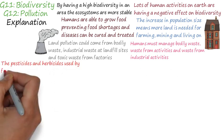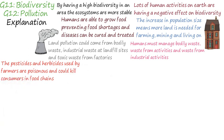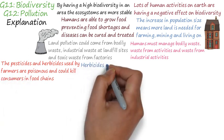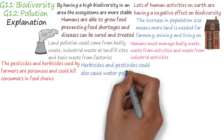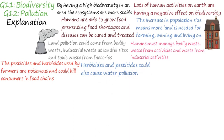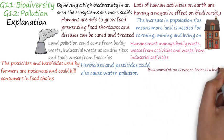Pesticides and herbicides are used by farmers to protect their crops from pests and weeds. These chemicals are poisonous, however, and could end up in food chains where they could kill consumers.